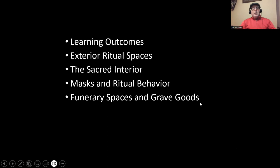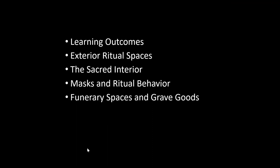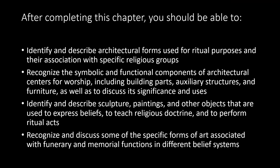We have learning outcomes to begin the chapter. There's a section on exterior ritual spaces, the sacred interior, masks and ritual behavior, and finally funerary spaces and grave goods. After completing this chapter, you should be able to identify and describe architectural forms used for ritual purposes and their association with specific religious groups, recognize the symbolic and functional components of architectural centers for worship — including building parts, auxiliary structures, and furniture — and discuss their significance and uses. You'll also be able to identify and describe sculpture, paintings, and other objects used to express beliefs, teach religious doctrine, and perform ritual acts. Finally, you'll be able to recognize and discuss specific forms of art associated with funerary and memorial functions in different belief systems.